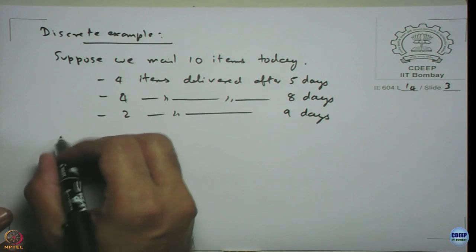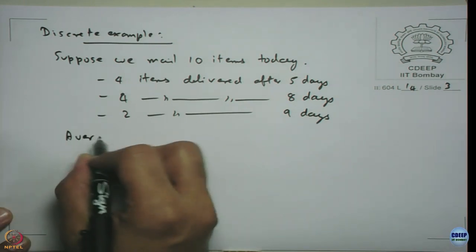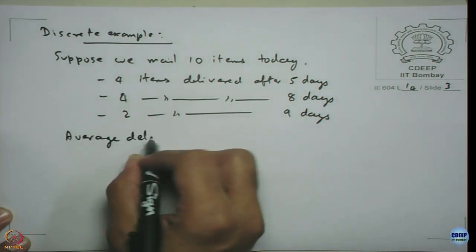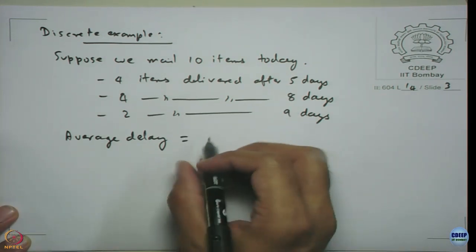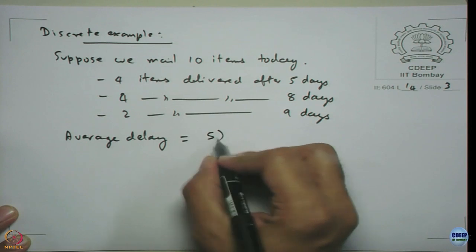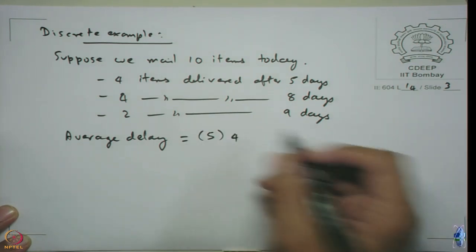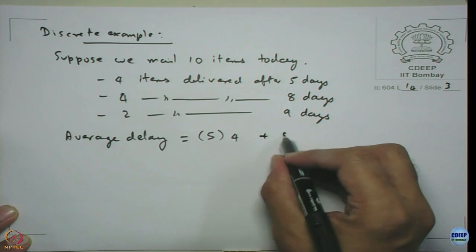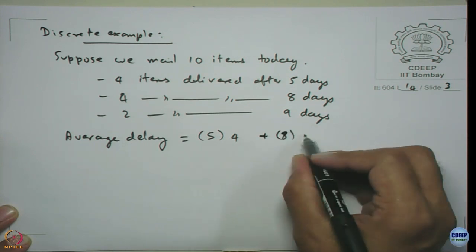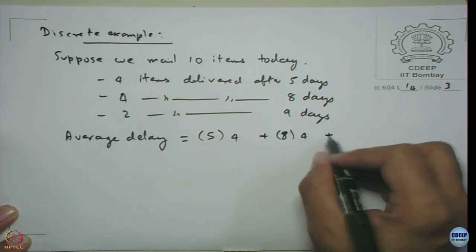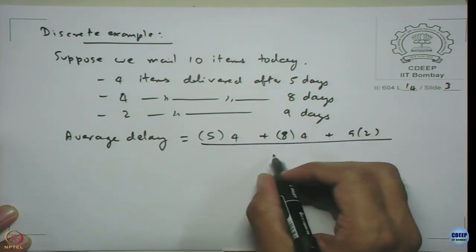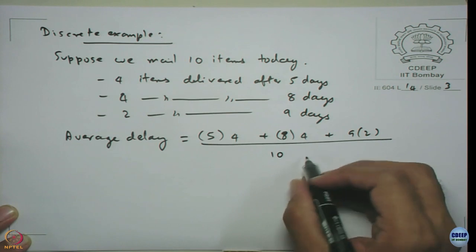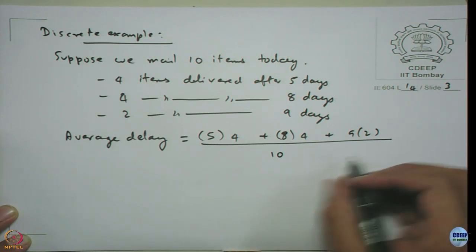What will be the average delay? It will be the time multiplied by the quantity supplied at that time plus 8 into 4 plus 9 into 2 divided by the 10, that is the total quantity.